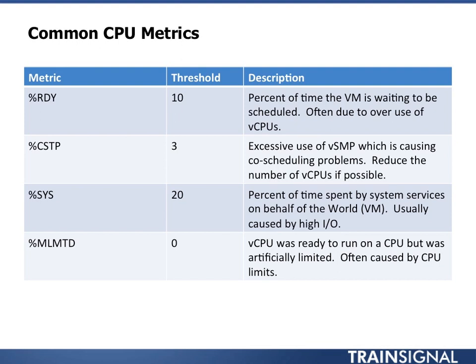Percent System is the percent of time spent by the system on behalf of the VM, usually caused by high I/O. Basically the system is handling a lot of background work and interrupts, chewing up CPU time. You want to see this under 20 percent. If it's higher, check that your I/O is being done efficiently — right drivers, right devices for the guests, good NICs and HBAs in the servers.